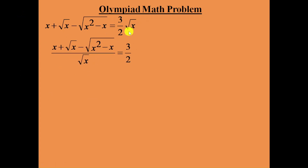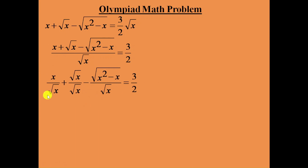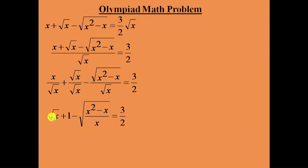Now bring this square root of x from the right side to the left side. Then distribute this denominator square root of x to each item in the numerator: x divided by square root of x, square root of x divided by square root of x, minus x squared minus x divided by square root of x. Here, x can be written as square root of x times square root of x. We can cancel one square root of x in the denominator and one in the numerator — remaining is one square root of x. This numerator and denominator are both the same, so we can cancel them. Remaining is 1.